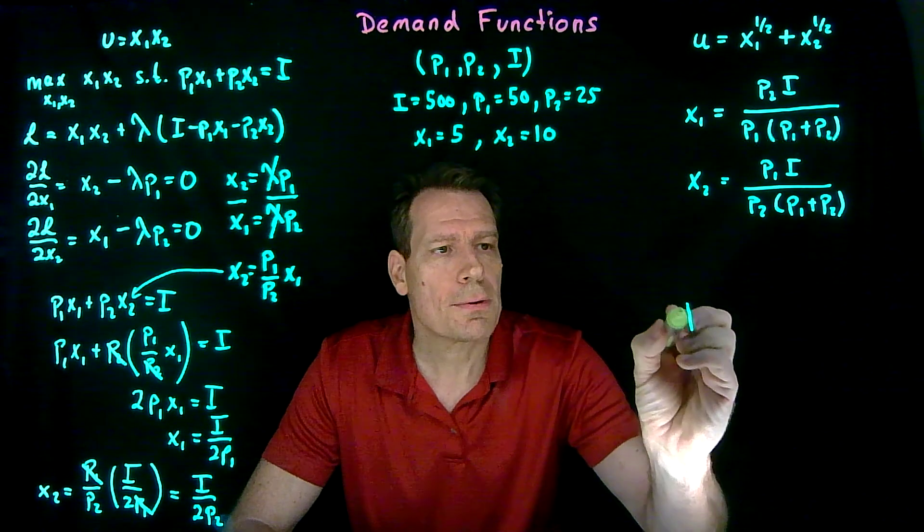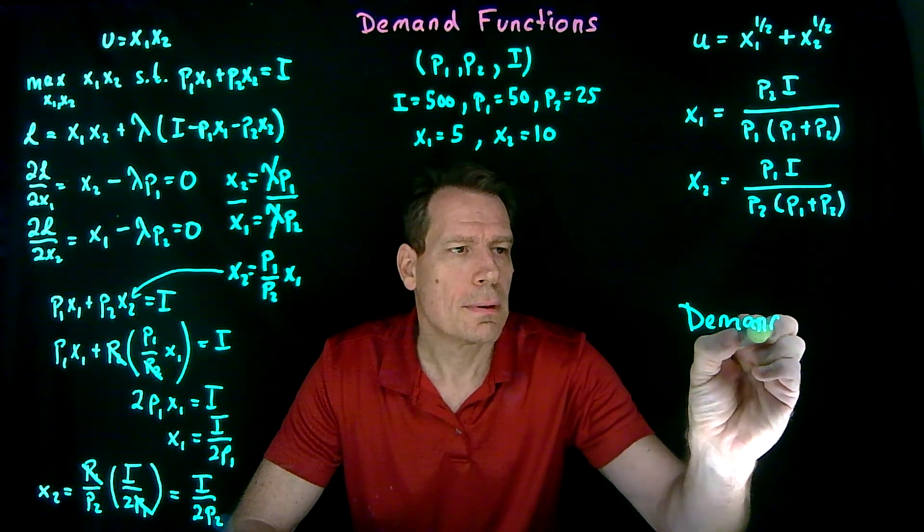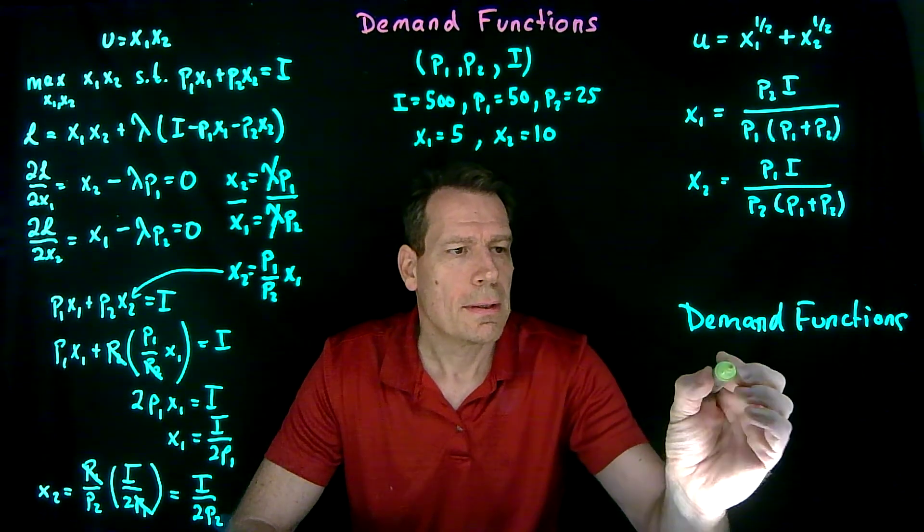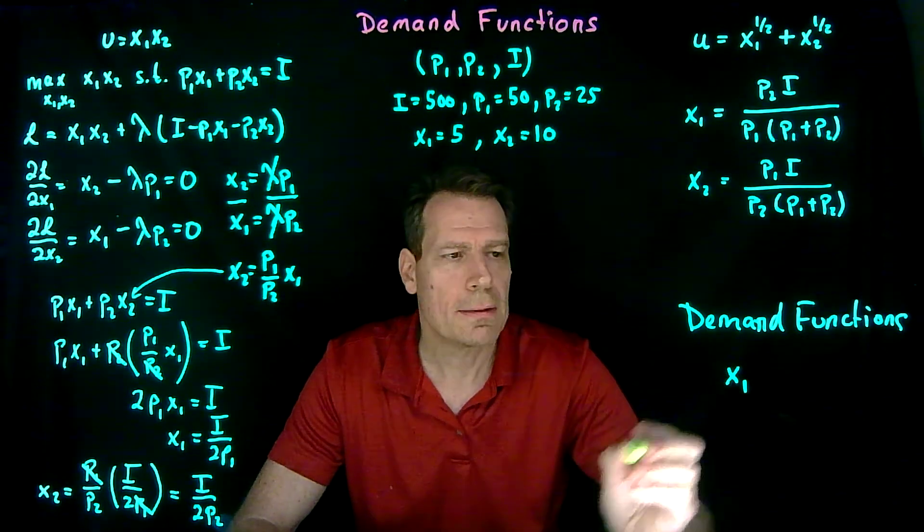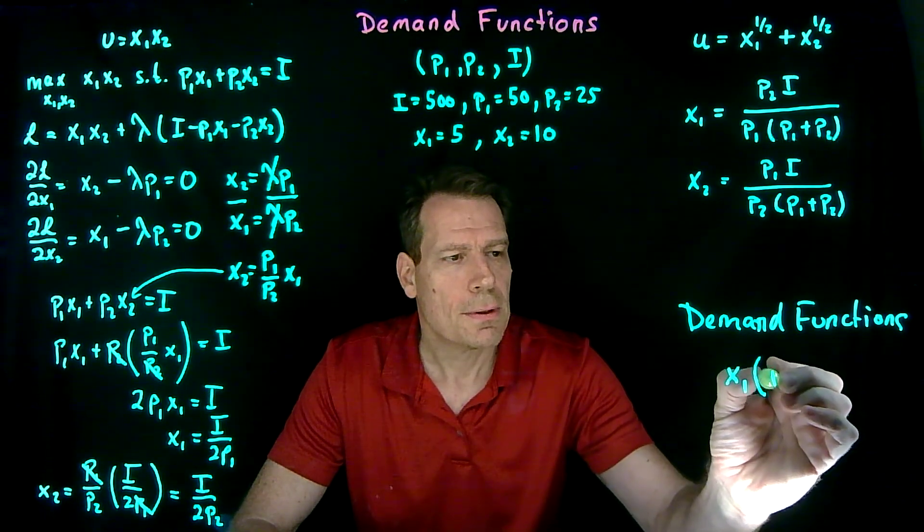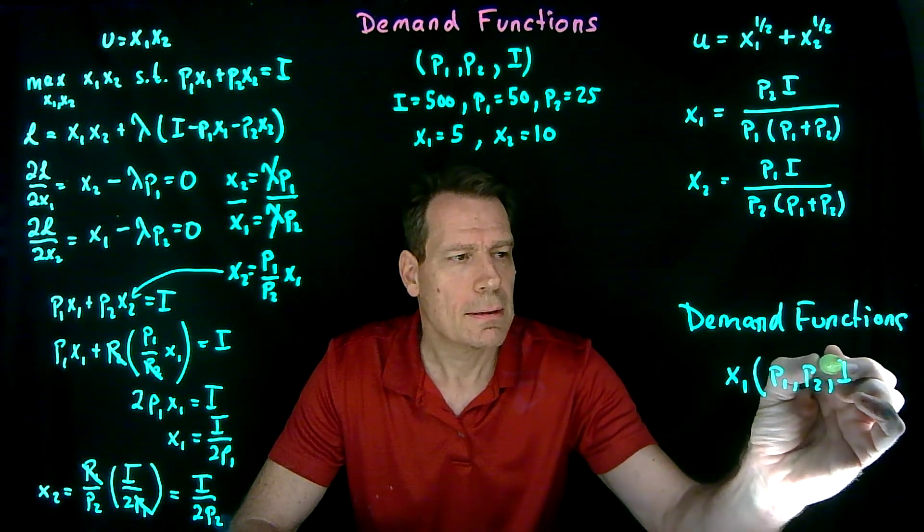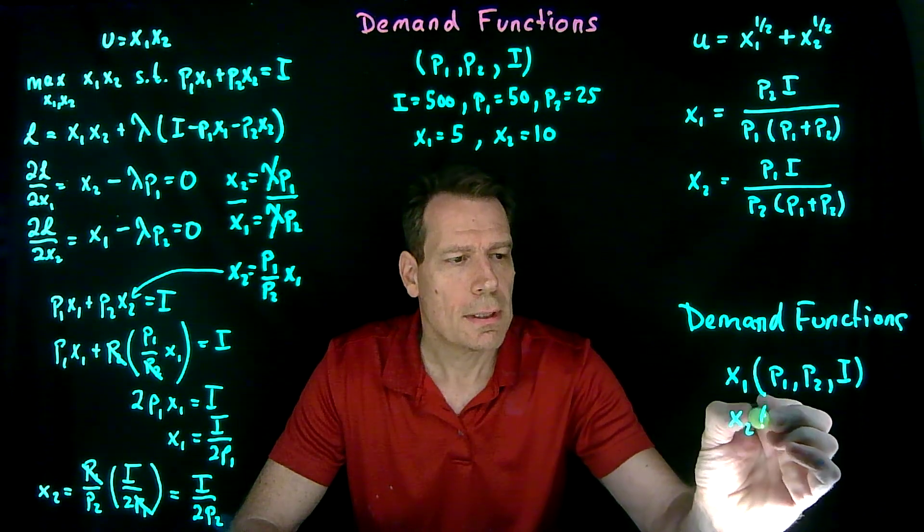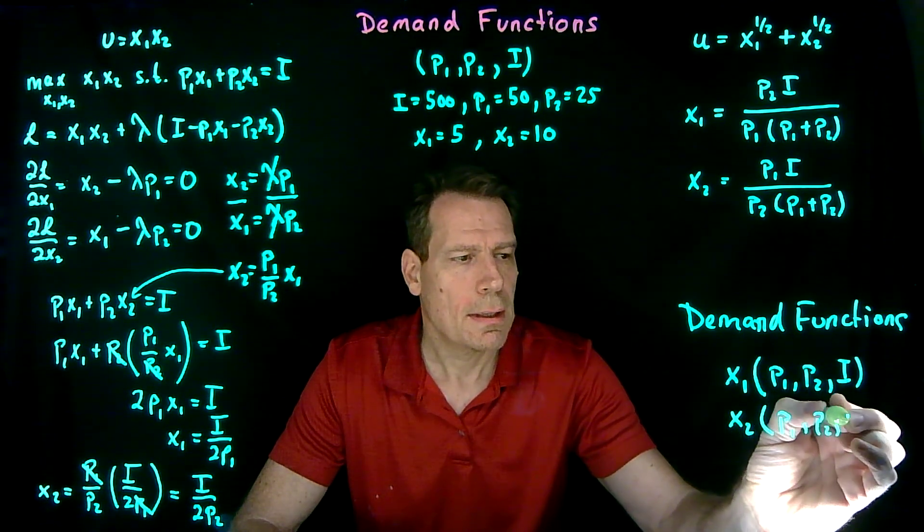So in general, then, demand functions will take the form that the demand function for good x1 is a function of both prices and income, and the demand function for good 2 is also a function of both prices and income.